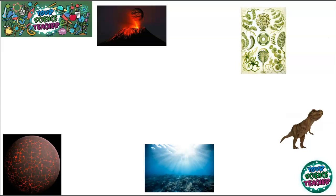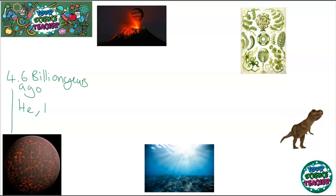We know the composition of today's atmosphere, but how did it become what it is today? Has it fluctuated throughout time, and were there other gases more prominent historically? The answer is yes. The Earth formed around 4.6 billion years ago, and when it formed it didn't have an atmosphere. Elements like helium and hydrogen formed the first atmosphere, because they were among the only elements around at that time, being fused in stars.